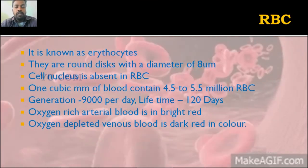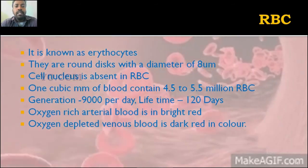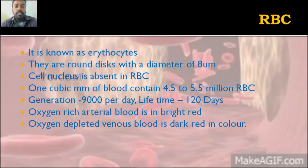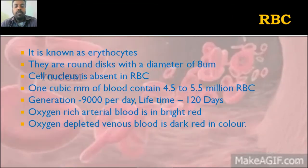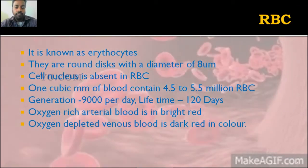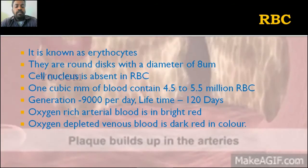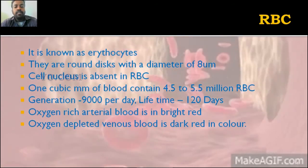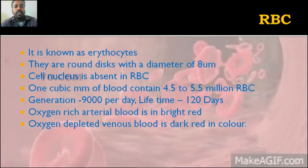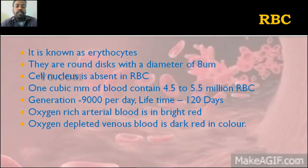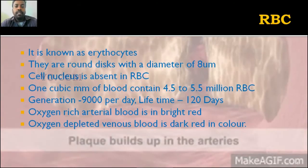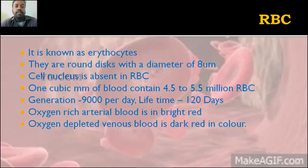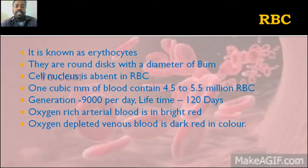The generation rate of RBCs is 9,000 per day. In our body we generate 9,000 red blood cells per day. The lifetime of red blood cells is around 120 days. Blood cells have two different colors: oxygen-rich arterial blood looks bright red, while blood containing carbon dioxide or lower oxygen appears dark red.